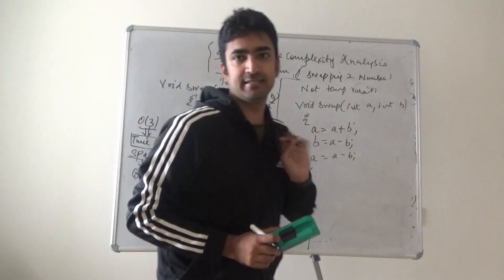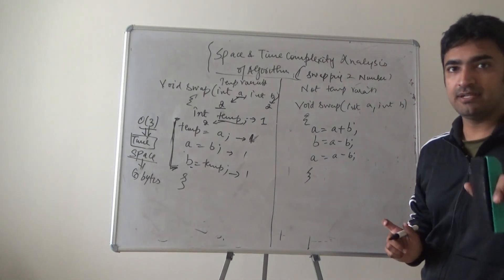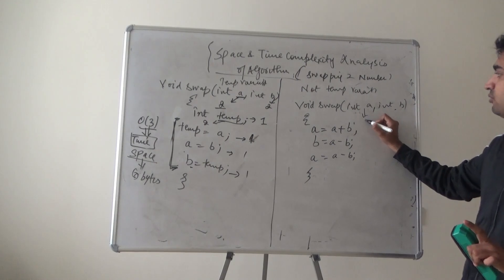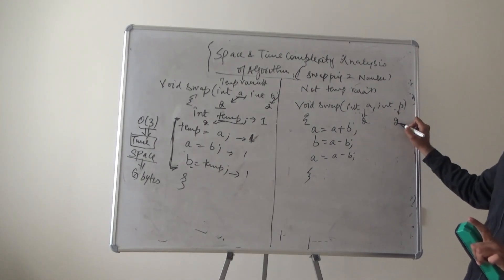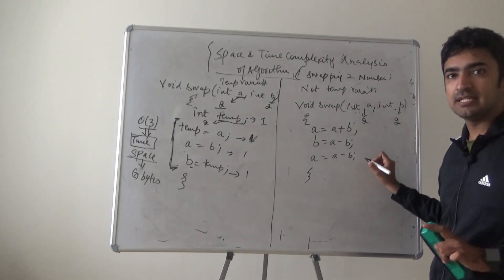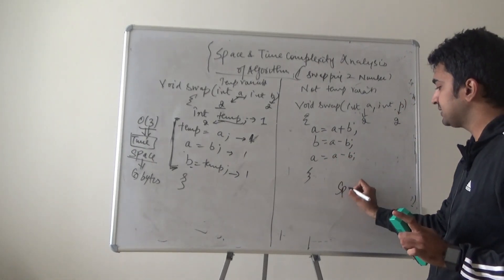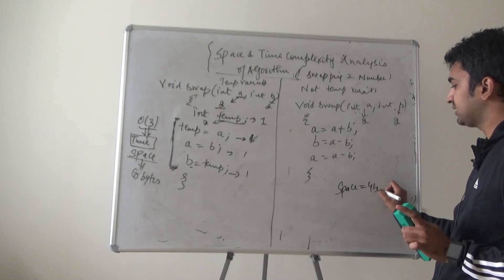Now, I'm moving towards this particular algorithm. Now, how many variables I have used? I have used only two variables. So, if it is taking two bytes, if b is taking two bytes. So, it means, it entirely means that over here space is four bytes, which is used.